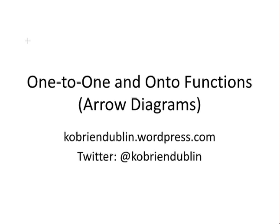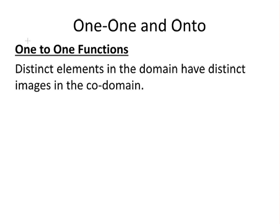In this presentation, we look at arrow diagrams and how they can be used to describe one-to-one and onto functions. First, let's get an idea of what a one-to-one function is. In a one-to-one function, distinct elements in the domain have distinct images in the co-domain.